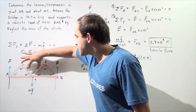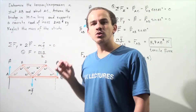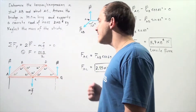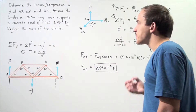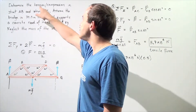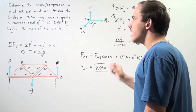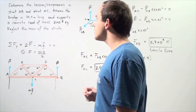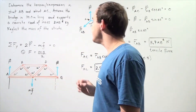All these triangles are equilateral triangles, meaning the angles are 60 degrees. We want to determine the tension or compression in strut AB as well as strut AC.